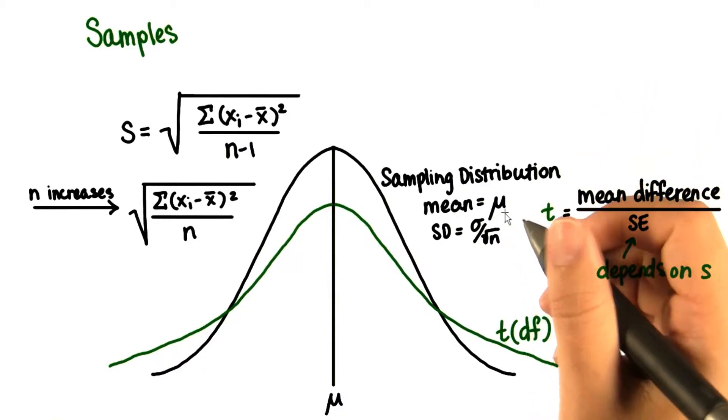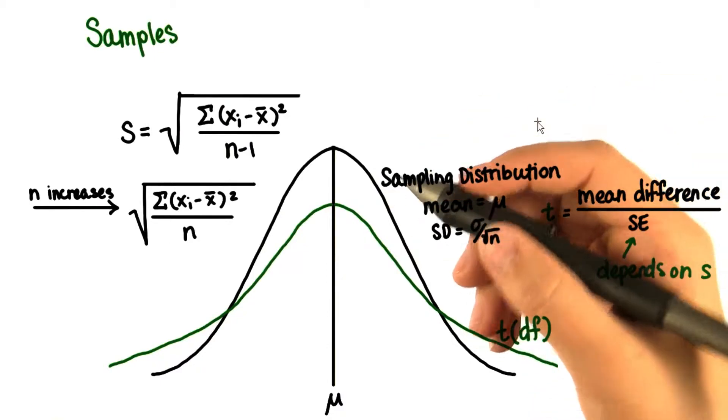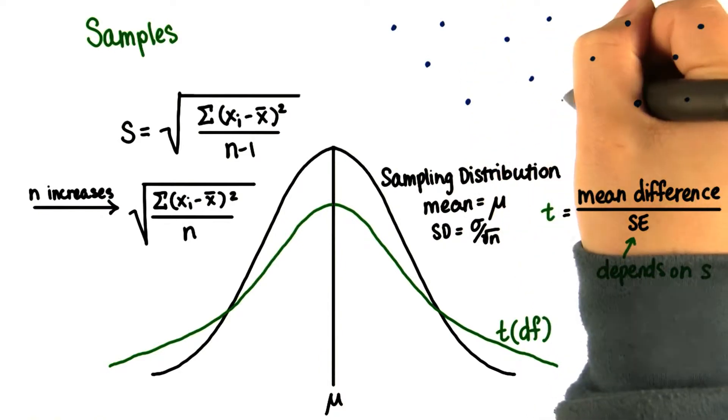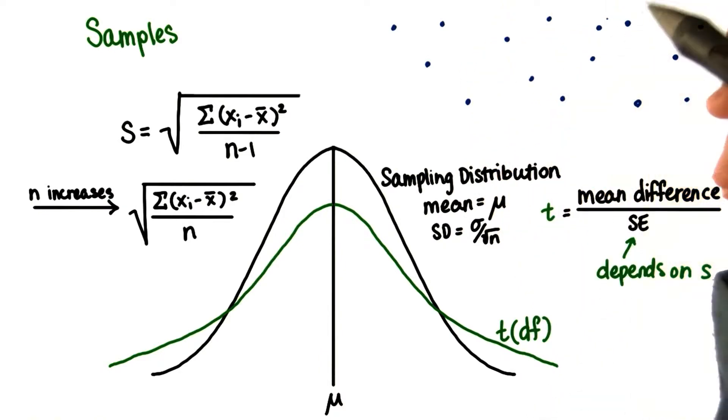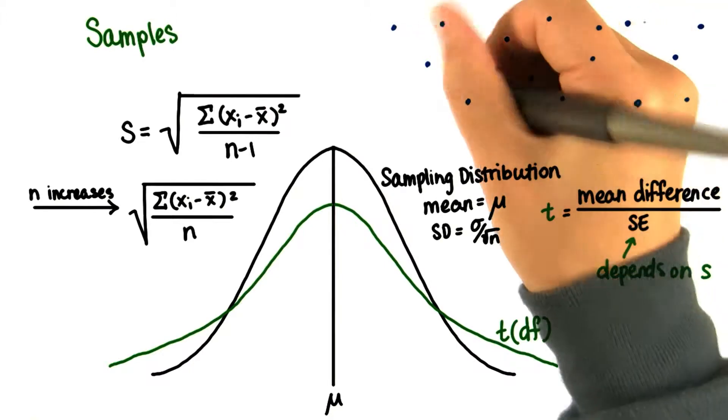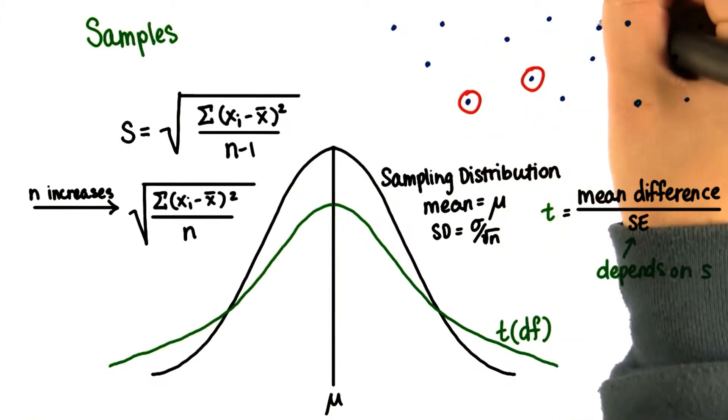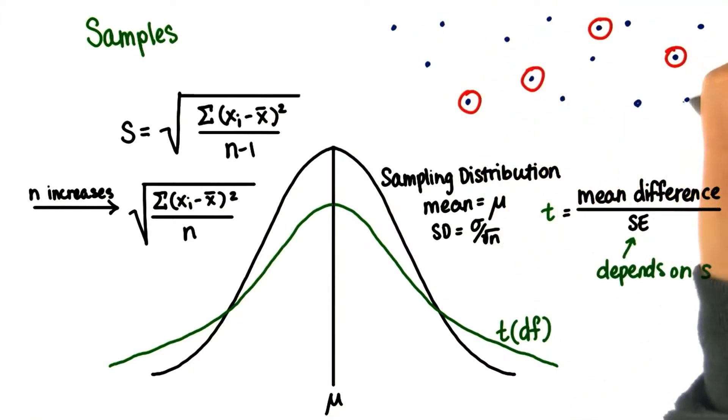Let's apply this idea of the degrees of freedom to samples and populations. Let's say these are values in a population. We can pick any n values from this population to have a sample of size n. If n is 5, let's say we pick these 5.